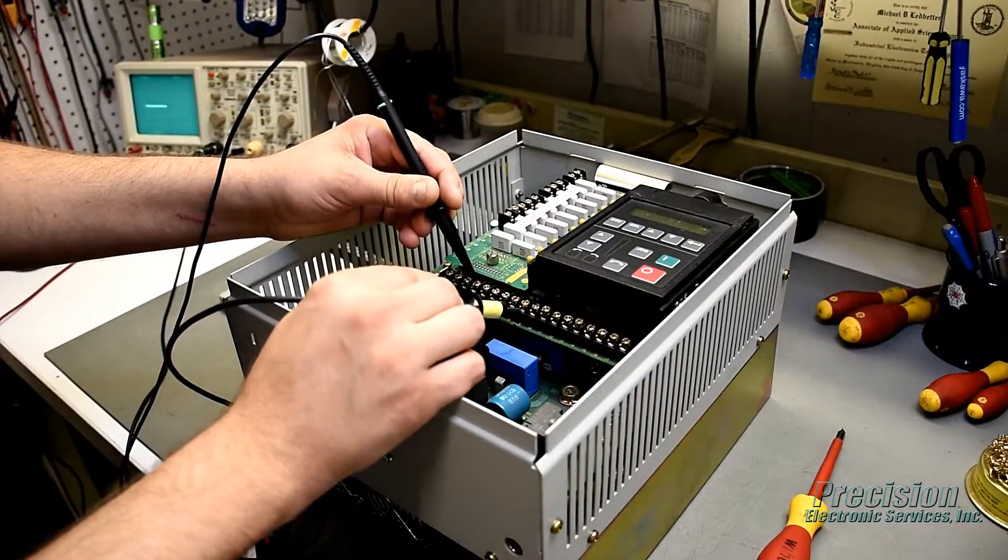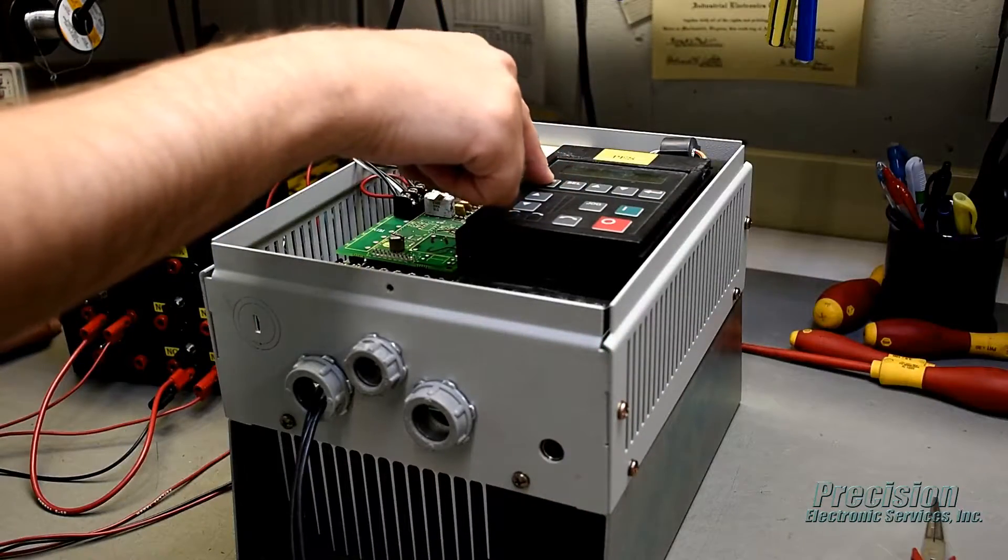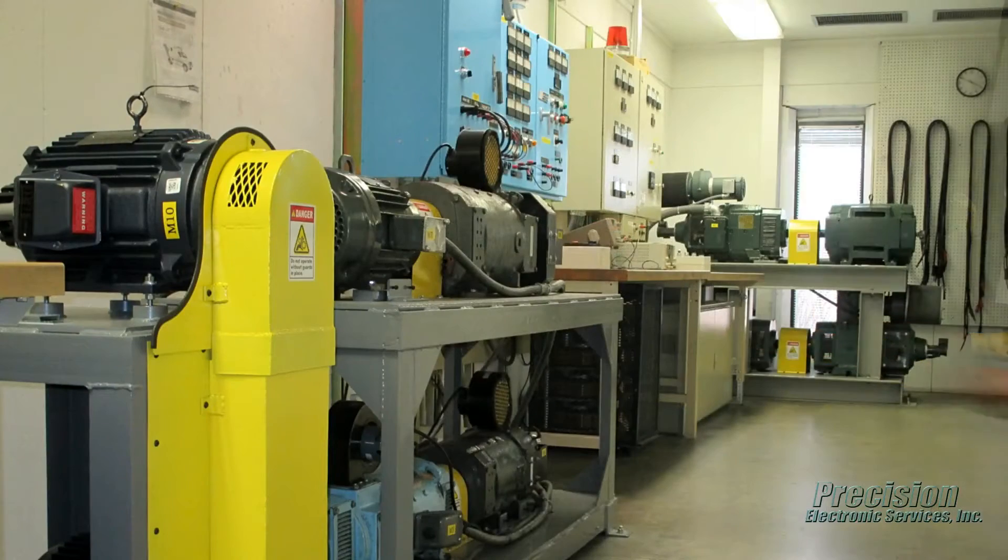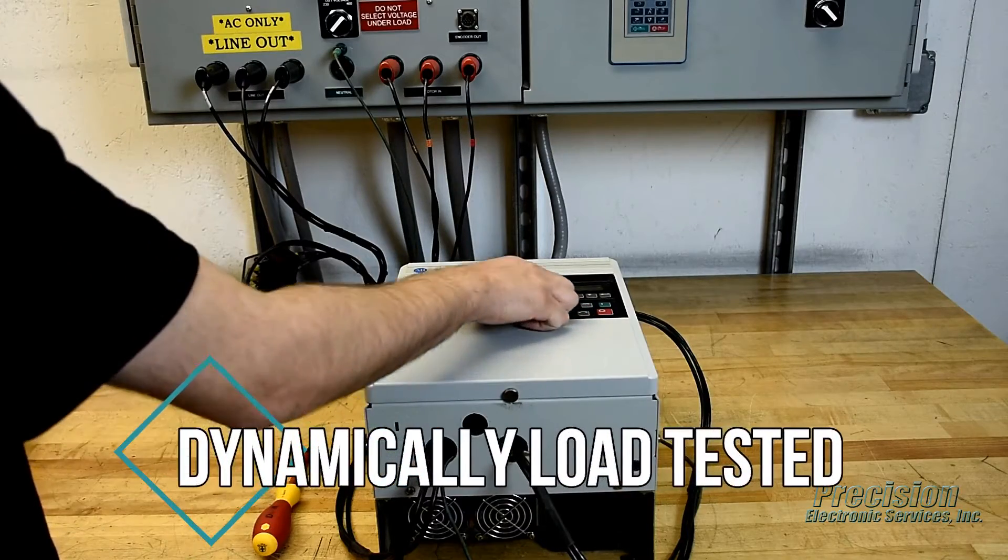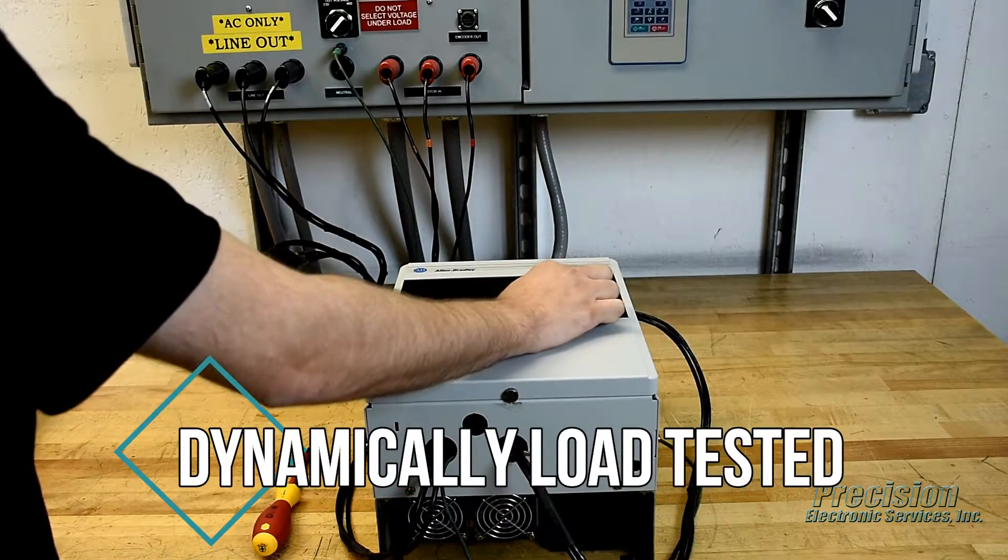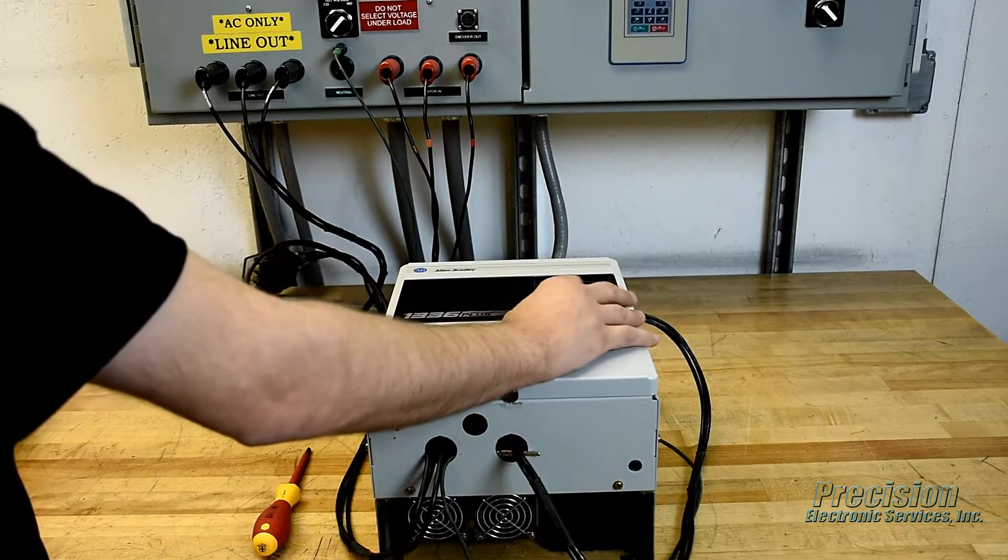After reassembly, power is applied to the drive, and all power supplies, inputs, and outputs are tested, along with the keypad, communications, and other functions. Once the unit passes all functionality tests, it is dynamically load tested and burned in on one of our custom-engineered load centers. This critical step of our repair process ensures your drive will perform as required when reinstalled at your facility.